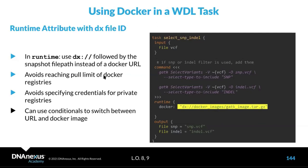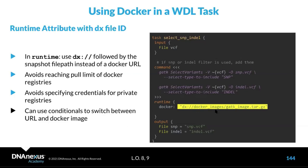In the runtime section, you use 'dx://' followed by the snapshot file path instead of the Docker URL — for example, 'docker_images/gatk_image.tar.gz'. This avoids reaching Docker registry pull limits and can save pain around specifying credentials for private registries. Note that this does break portability, but one way to maintain portability is to use conditionals to switch between the URL and the image file.